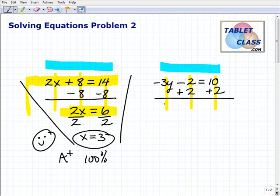Just the numbers and the variables are changing, but the procedure doesn't. So I'm going to end up with negative 3y here. You can see that the negative 2 and the positive 2 cancel each other out. And now I have 12. So to solve for y, I've got to divide both sides of the equation by negative 3.